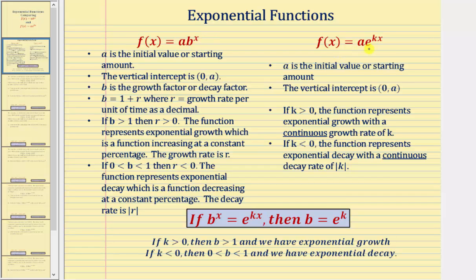Comparing this to f of x equals a times e raised to the power of kx: a is still the initial or starting amount, but here if k is positive we have exponential growth with a continuous growth rate of k. If k is less than zero, we have exponential decay with a continuous decay rate of the absolute value of k. We can inspect this form to determine a continuous growth or decay rate, and in the b^x form we analyze base b to determine r, the growth or decay rate per unit of time.